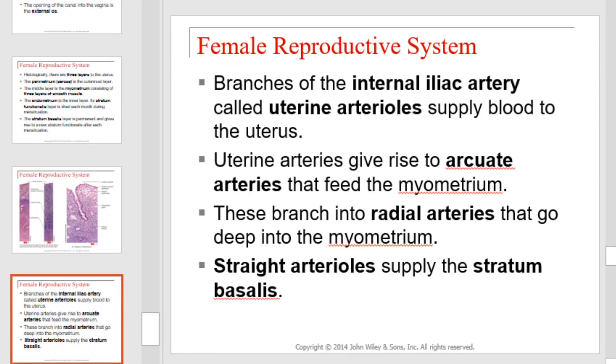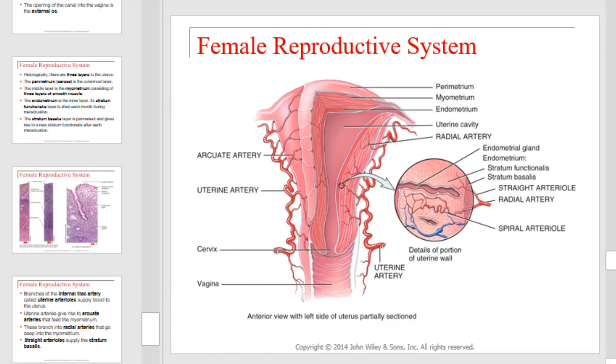Branches of the iliac artery, called uterine arterioles, supply blood to the uterus. Uterine arteries give rise to arcuate arteries that feed the myometrium. These branch into radial arteries that go deep into the myometrium. Straight arterioles supply the stratum basalis. The blood supply to the uterus is illustrated here.